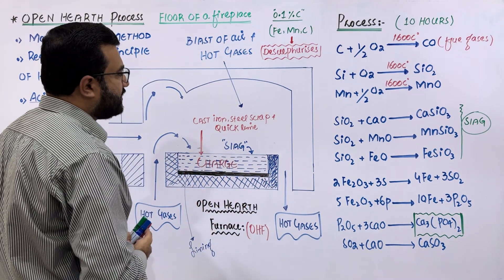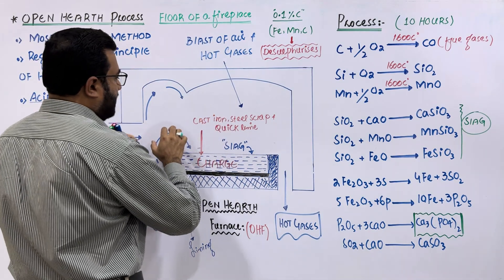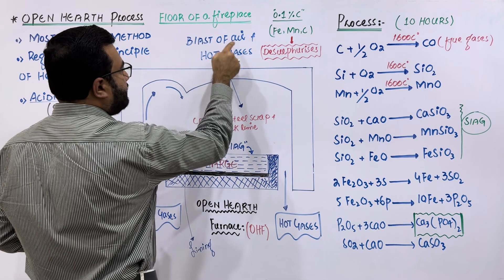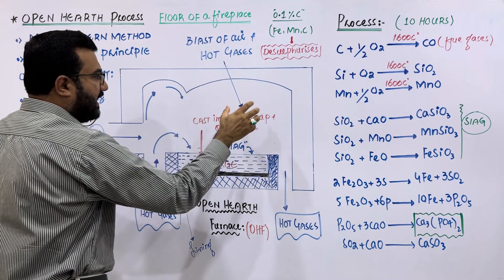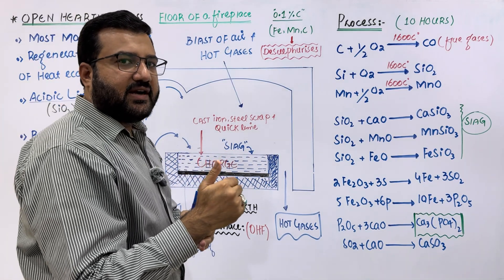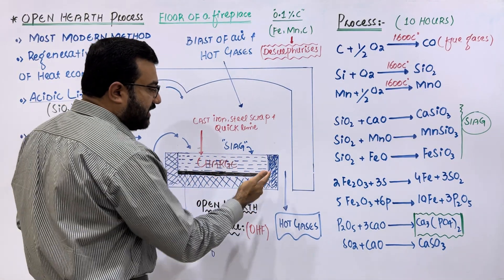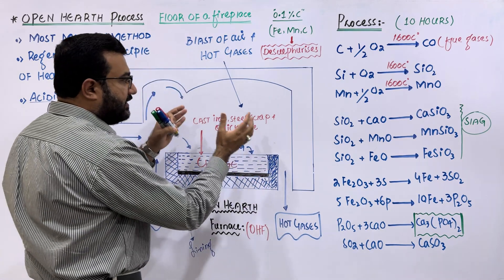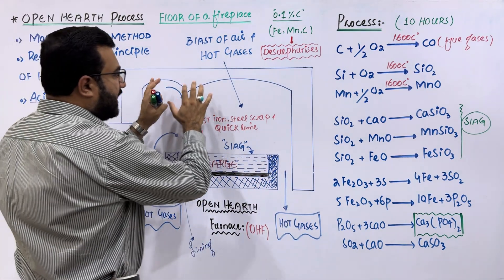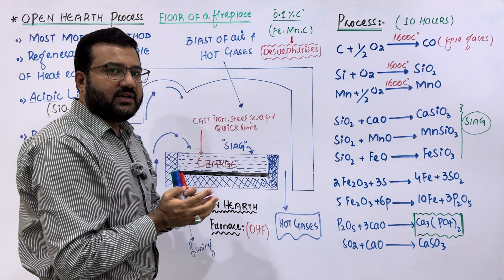This complete portion of the furnace has a blast of air and hot gases. The construction of the furnace is such that the bricks absorb 80 to 85 percent of the heat from the hot waste gases and return that heat to the incoming air, so that the high temperature inside the furnace is maintained without additional fuel consumption.